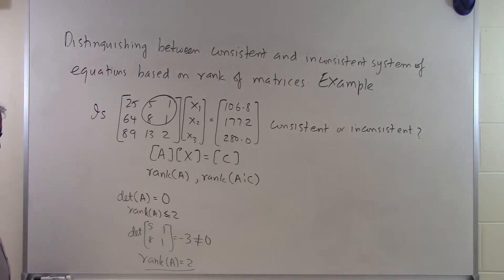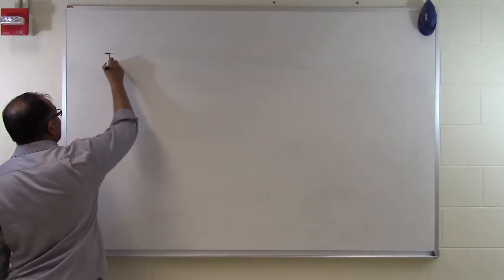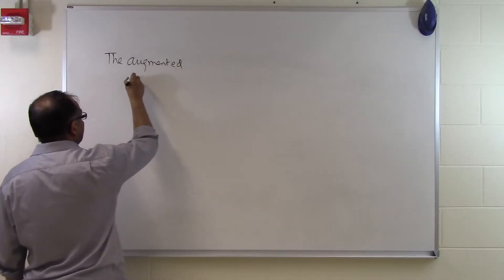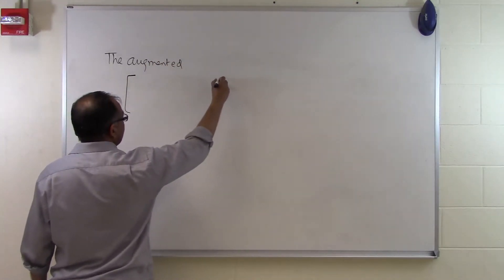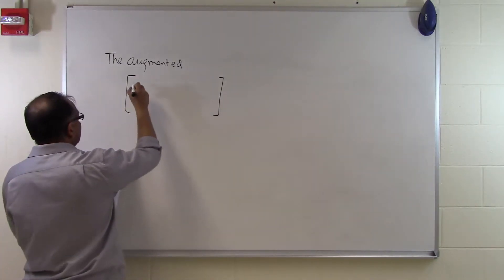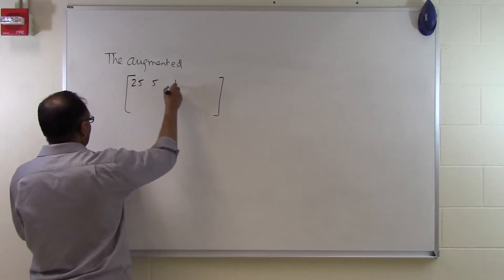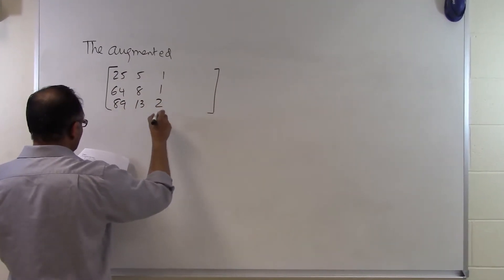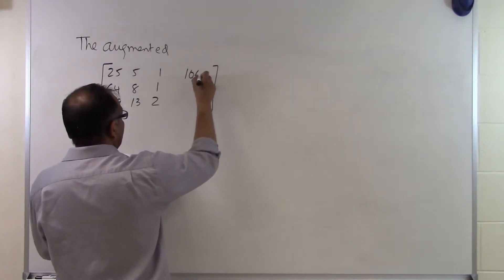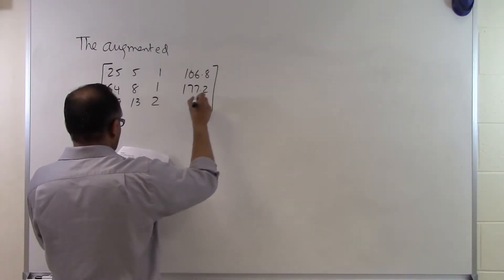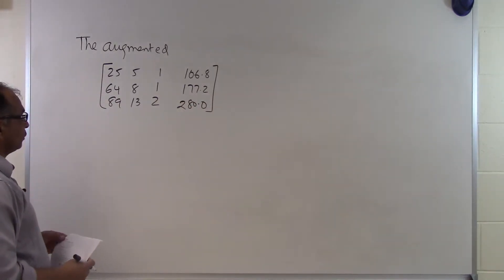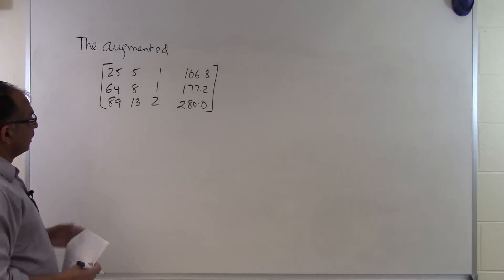Now I have to figure out what is the rank of the augmented matrix. The augmented matrix is the coefficient matrix with an additional column which is the right-hand side vector. So we have [25, 5, 1; 64, 8, 1; 89, 13, 2] with the right-hand side vector as our fourth column.